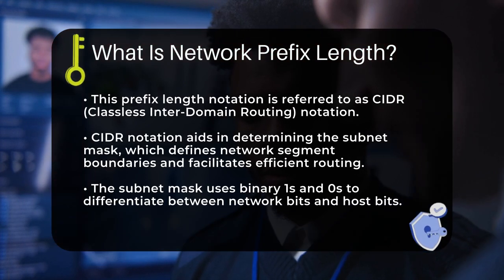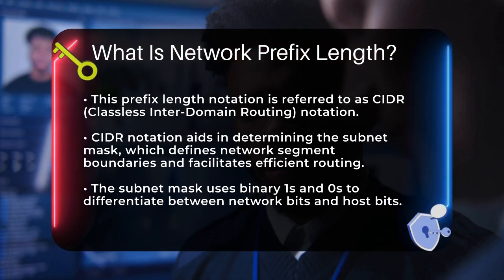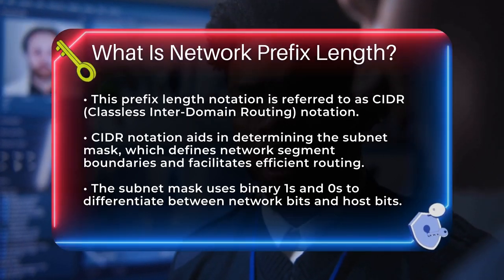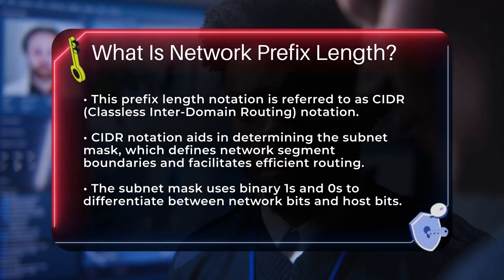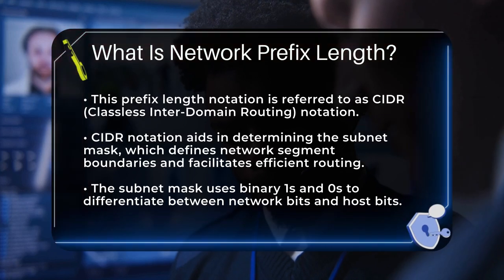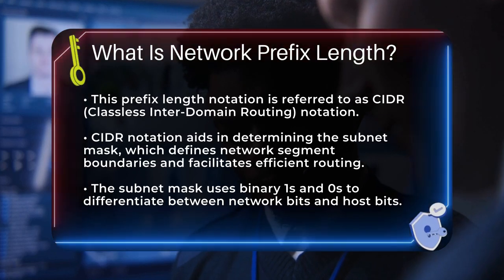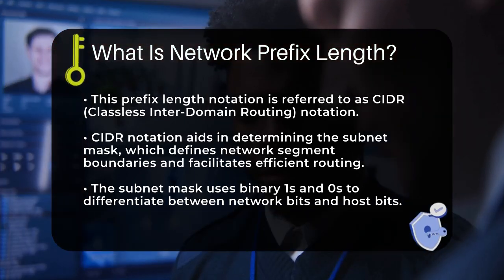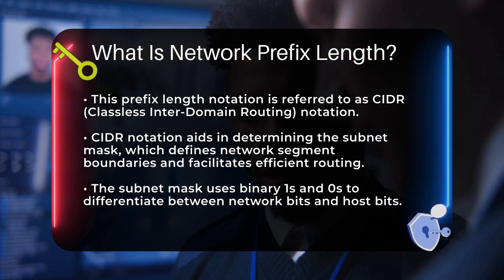The subnet mask uses 1s and 0s to indicate which bits are for the network and which are for the host. In IPv6, the concept is similar but with much larger addresses.